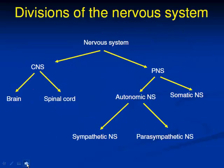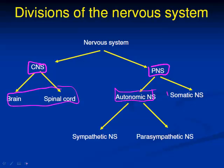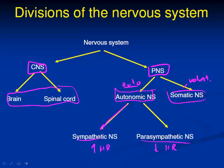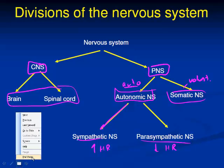Here's a final general overview of the divisions. The central nervous system is the brain and spinal cord. The peripheral nervous system breaks into the somatic, which is voluntary, and the autonomic, which is automatic. The autonomic breaks into sympathetic, which increases heart rate, and parasympathetic, which decreases heart rate. We'll go into more detail in class, but that's essentially all you need to know on the divisions of the nervous system. Write down any questions and we'll go over them in class.